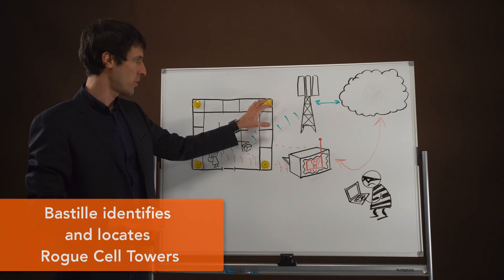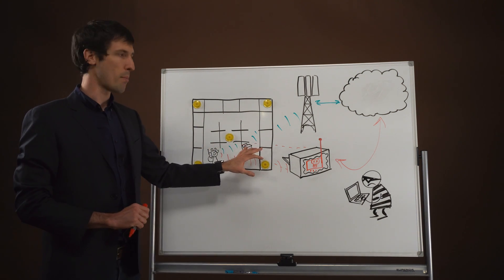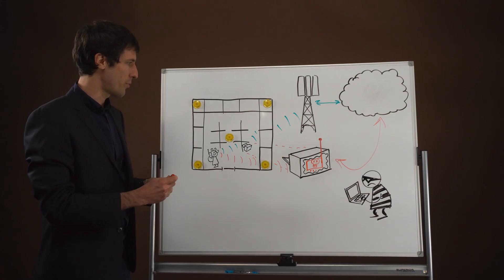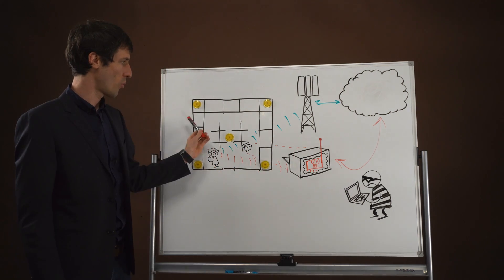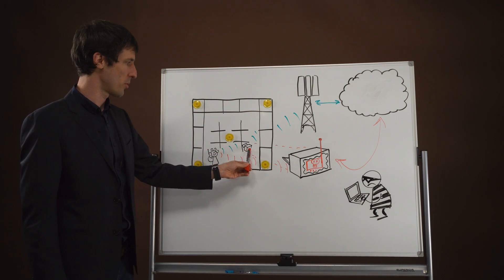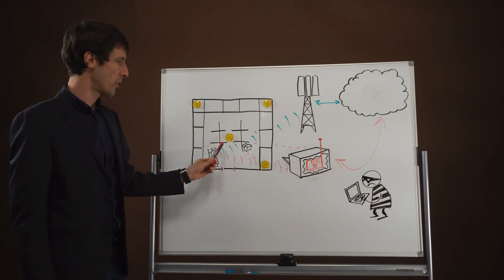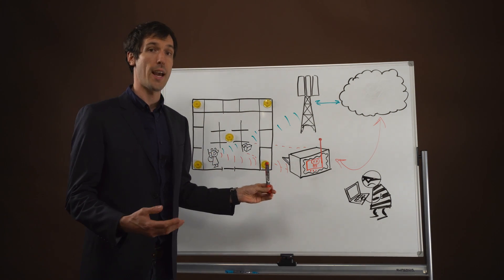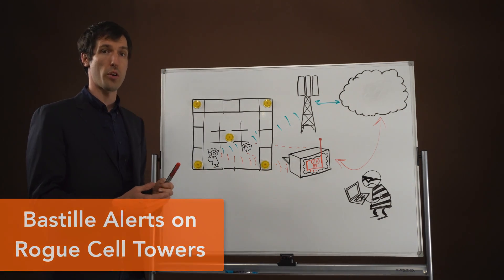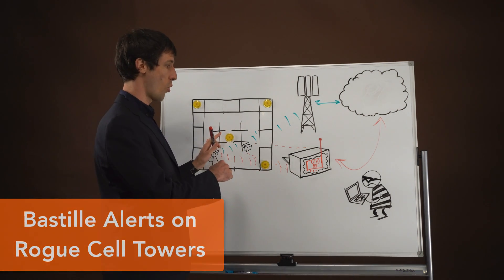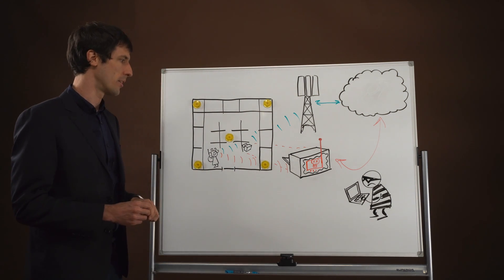Now if you have the Bastille solution deployed, these sensors are continually monitoring. If a new cell tower appears and it's actually within the vicinity and perhaps able to be localized within the map, an alert can be thrown indicating that there is a rogue cell tower, perhaps one that's transmitting on an illegal band or as an operator that's not expected within that particular area.